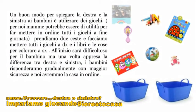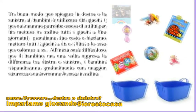Un buon metodo per insegnare la destra e la sinistra ai bambini è quello di utilizzare i propri giocattoli. Per le mamme potrebbe essere utile anche per far mettere in ordine i giochi a fine giornata. Prendiamo due ceste e facciamo mettere tutti i giocattoli nella cesta di destra e i libri e le cose per colorare nella cesta di sinistra. All'inizio questo gioco potrà risultare difficoltoso per il bambino, ma una volta appresa la differenza tra destra e sinistra, i bambini risponderanno gradualmente con maggior sicurezza e noi avremo la casa più in ordine.